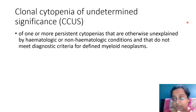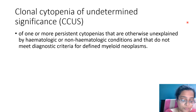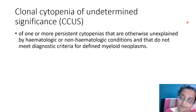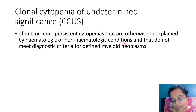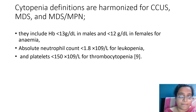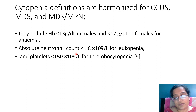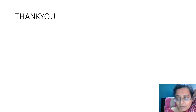What is CCUS — clonal cytopenia of undetermined significance? Compared to CHIP which is a biological finding of clonal cells with mutations but no disease, CCUS means the patient is having cytopenias but not full-blown cytopenias categorizable to a particular MDS or MPN. It is defined as one or more persistent cytopenias that are otherwise unexplained by hematological or non-hematological conditions and do not meet diagnostic criteria of a myeloid neoplasm. Cytopenia definitions are harmonized for CCUS and MDS: hemoglobin less than 13 g/dL in males and less than 12 g/dL in females, absolute neutrophil count less than 1.8 × 10⁹/L, and platelets less than 150 × 10⁹/L.